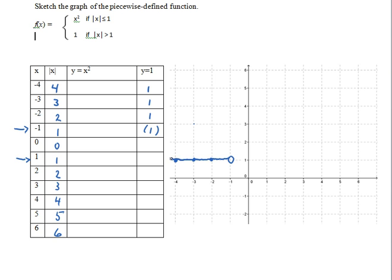This part of the graph is actually a horizontal ray starting at negative 1, 1 and going to the left.